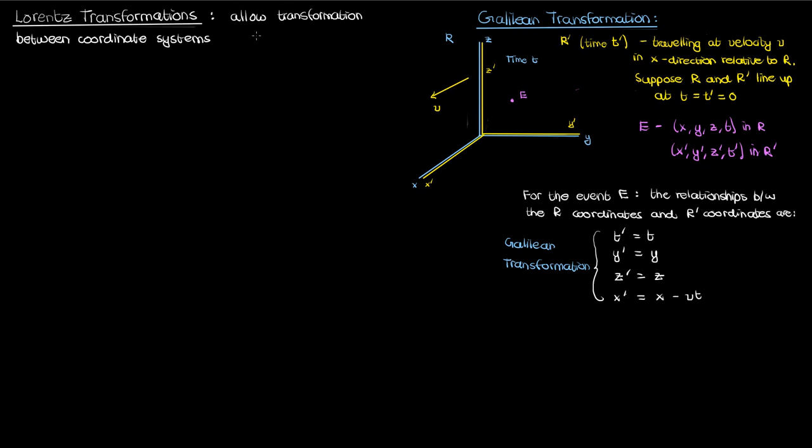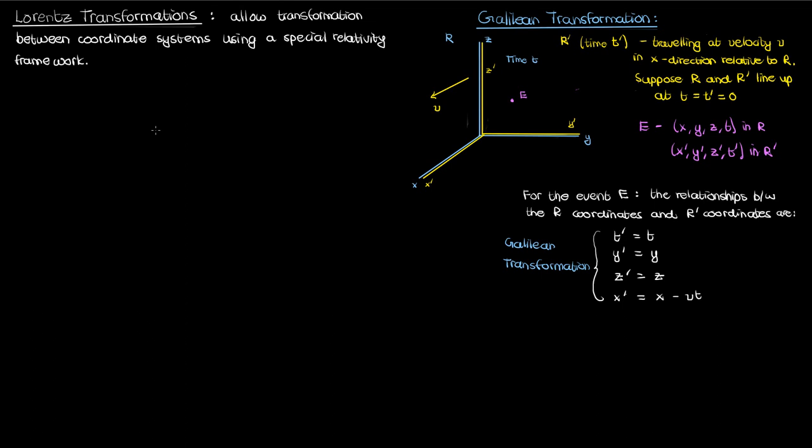However, the equations for the Lorentz transformation are different because these allow us to transform coordinates between reference frames in a special relativity framework. There are many ways to derive the Lorentz transformations. I'm going to derive them from the principles of time dilation and length contraction. You can of course derive them from other principles and then derive time dilation and length contraction from there, but this derivation method makes more sense in the context of what we've learned so far.